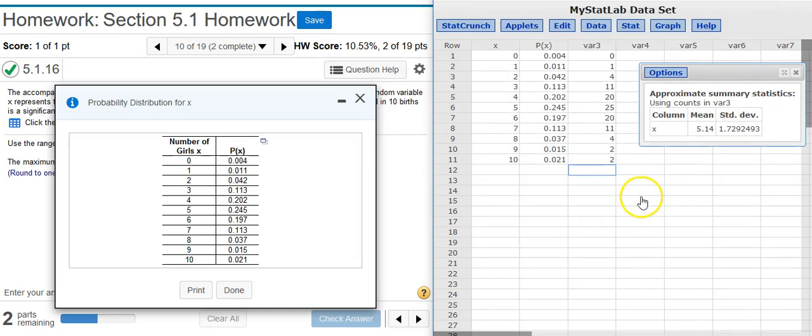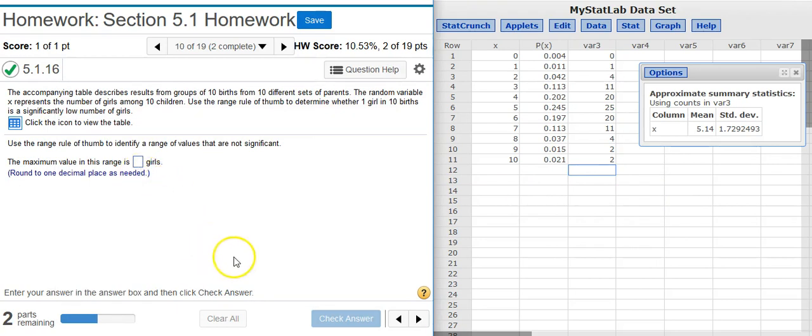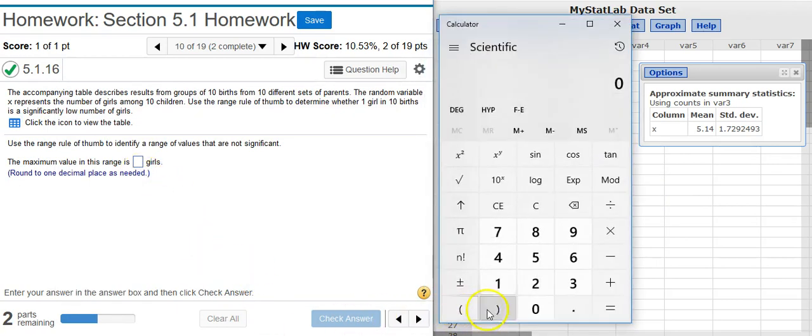So now, all I need to do is apply the range rule of thumb, come back over here and get my maximum value. So to do that, I'm going to whip out my calculator, I'm going to take the mean value, in this case 5.14 and add it to twice the standard deviation.